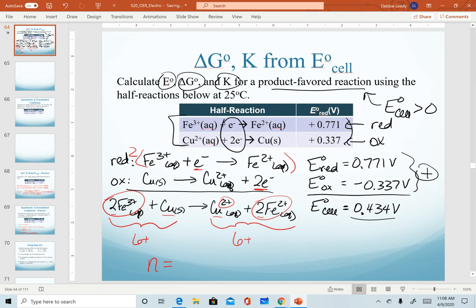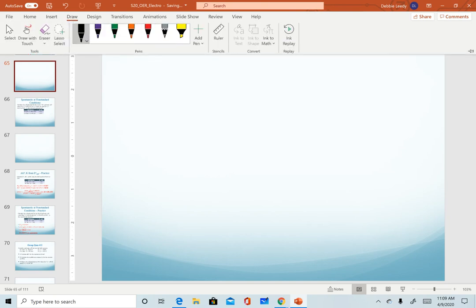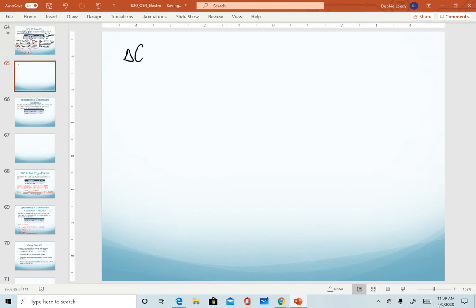Remember the n value is the coefficient on our electrons when they cancel out. In this scenario it means that we have 2 moles of electrons as our n value. Alright, I inserted a blank screen so that we could finish up our calculations. So our next step is to calculate our delta G naught.